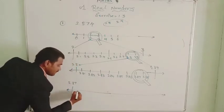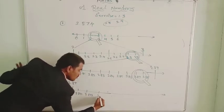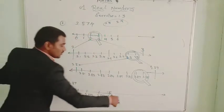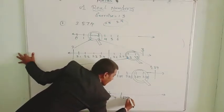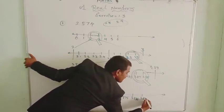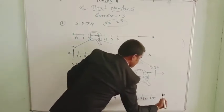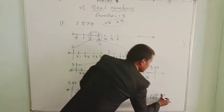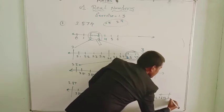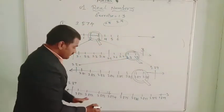Between 2.87 and 2.88, we get 2.871, 2.872, 2.873, 2.874 — and this is what we need. Continuing: 2.875, 2.876, 2.877, 2.878, 2.879.